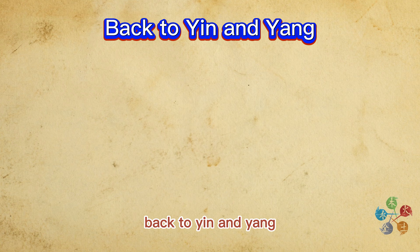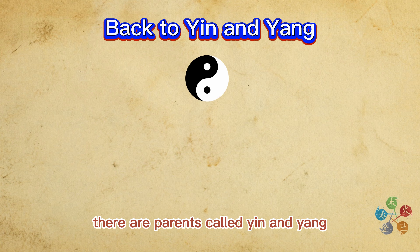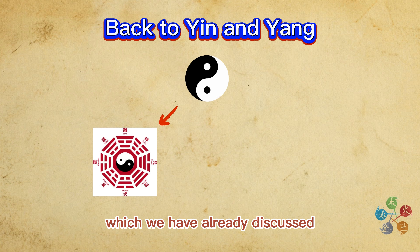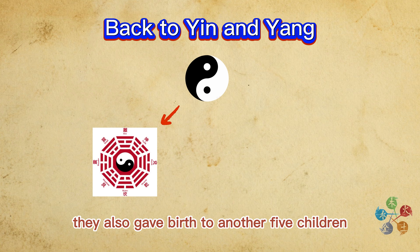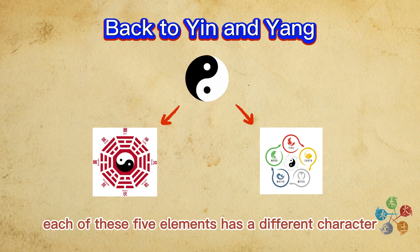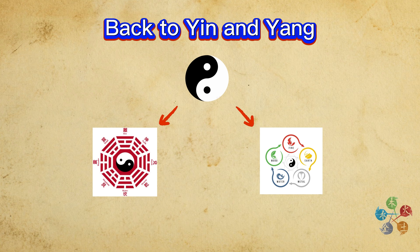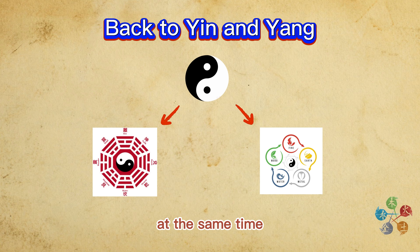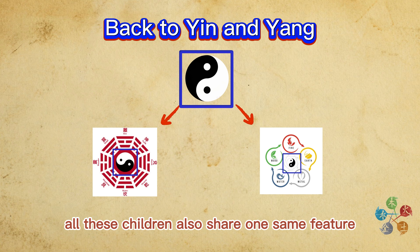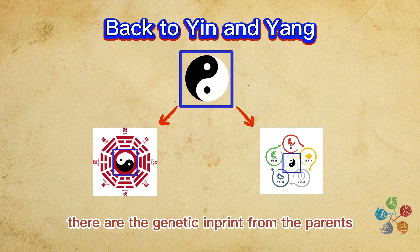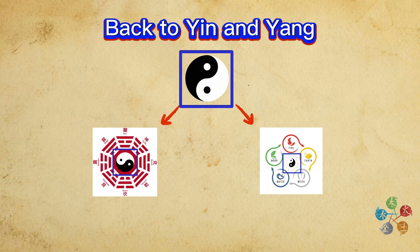Back to Yin and Yang. Think about it in this way: there are parents called Yin and Yang. They gave birth to eight children, namely eight trigrams, which we have already discussed. They also gave birth to another five children, which are the five elements. Each of these five elements has a different character, just as each child has unique personality traits. At the same time, all these children share one same feature, which is Yin and Yang — the genetic imprint from the parents.